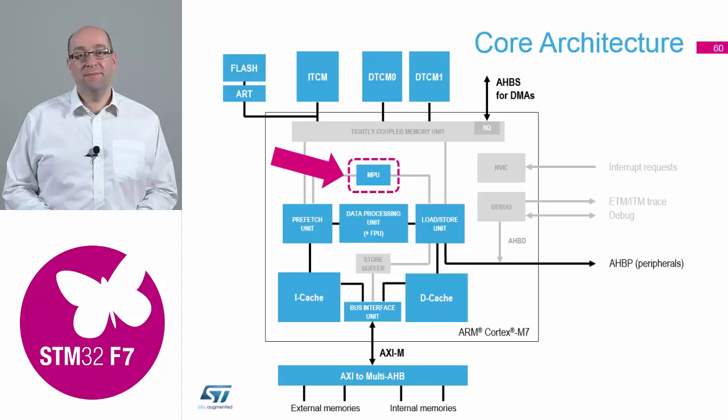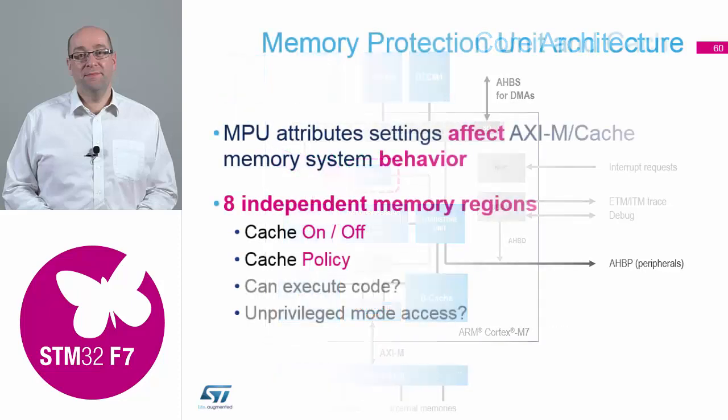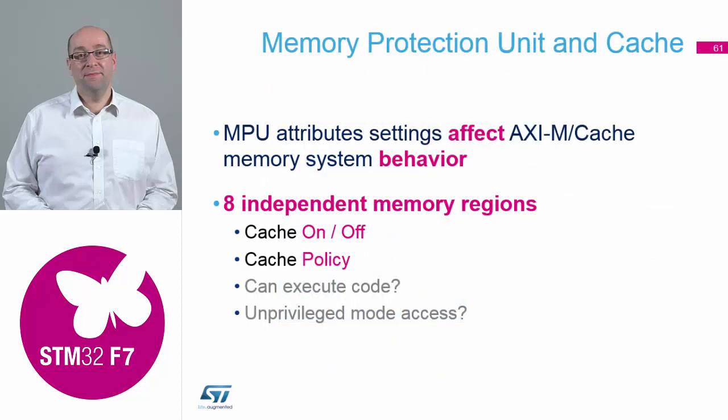The MPU block, which is in all of the Cortex M4 and M7 devices, covers eight independent memory regions where you can allocate the caching to be on or off, the particular cache policy for that memory region, and whether you can execute code or the privilege mode access, which you need for the RTOS.